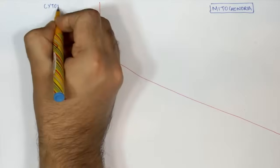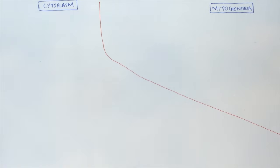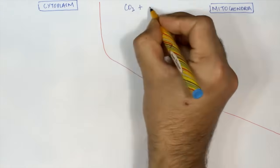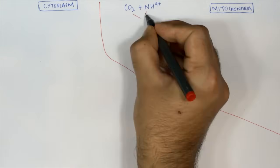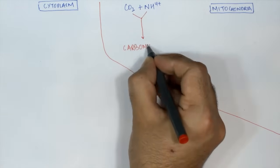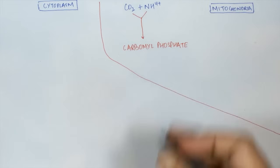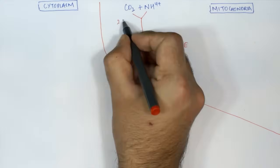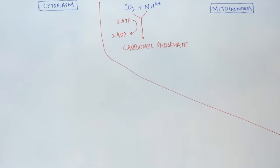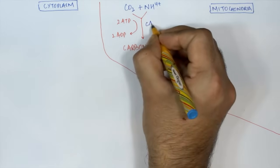The urea cycle actually begins inside the mitochondria. The combination of carbon dioxide and ammonium ions produces carbamyl phosphate. This reaction requires two ATP molecules and it also requires the enzyme carbamyl phosphate synthetase one.